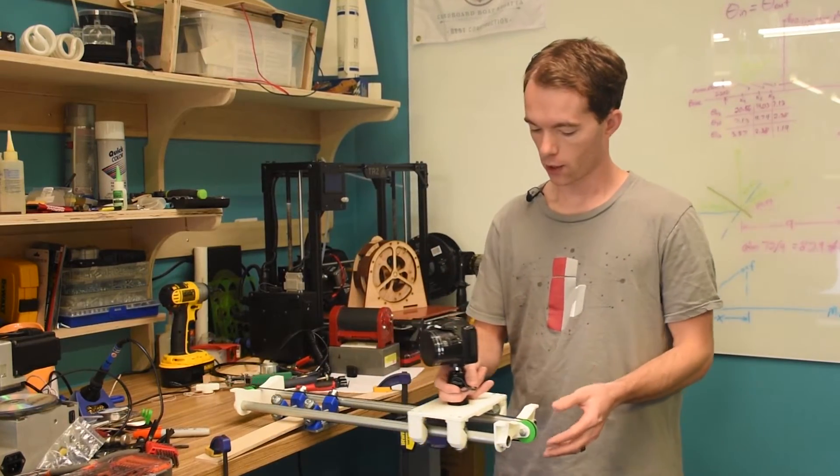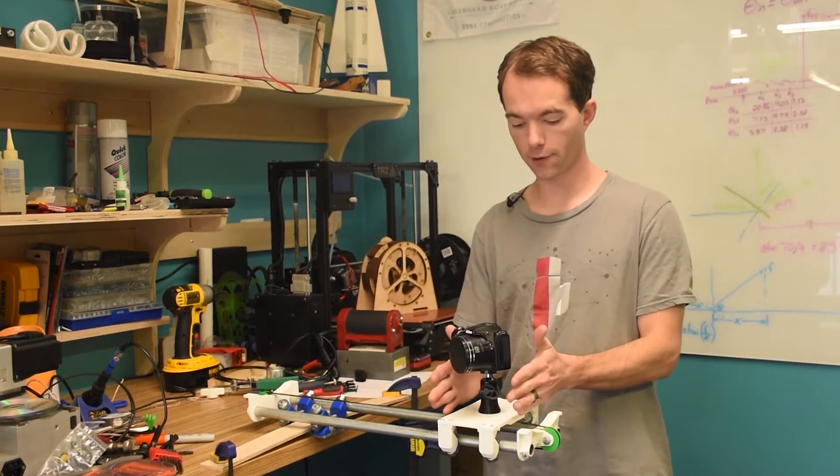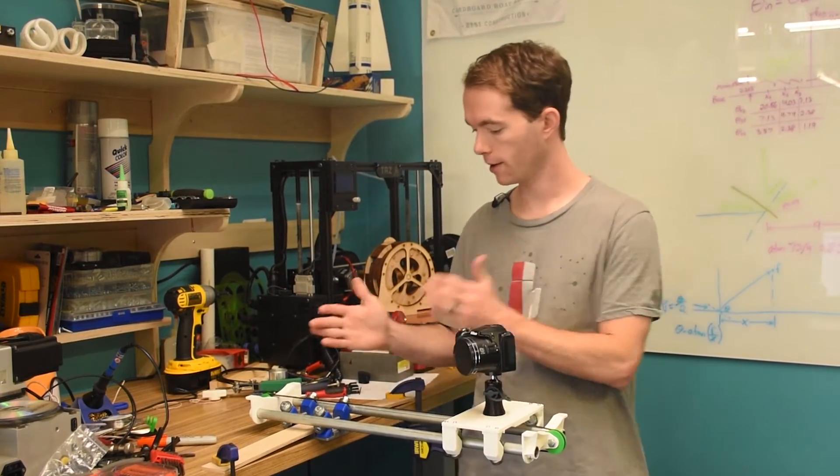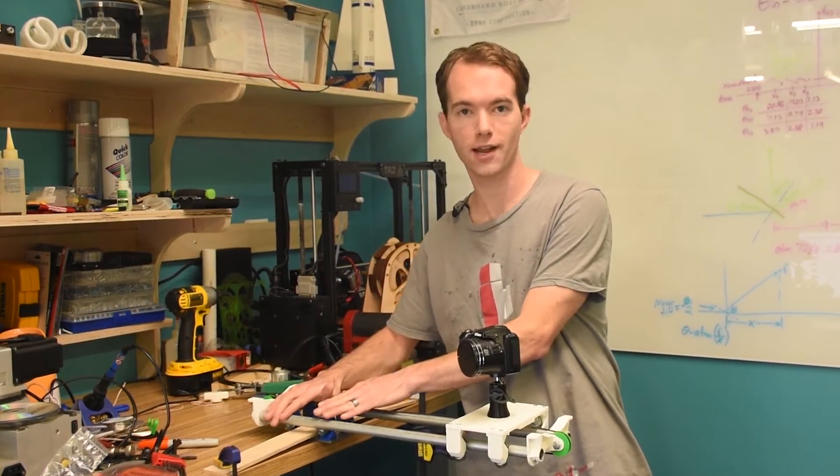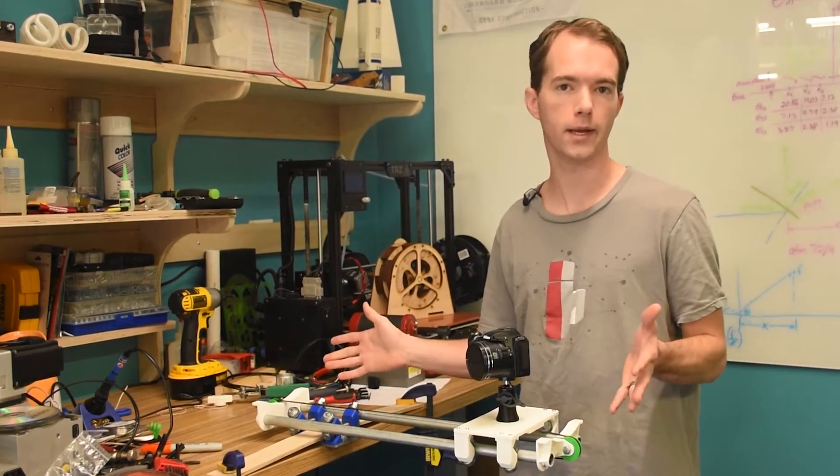So what happens here is you've got the solid frame and then you've got one moving trolley and a stationary trolley over here that is attached to the tripod head, presumably if you have one.